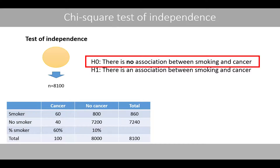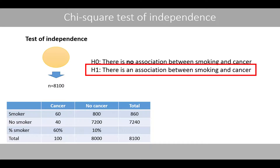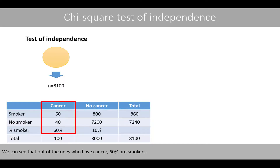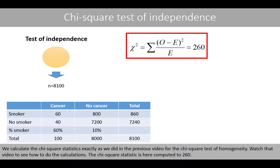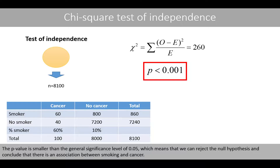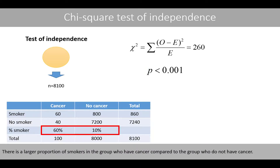The null hypothesis of this test states that there is no association between smoking and cancer. We can see that 60% of smokers have cancer, whereas only 10% of non-smokers have cancer. We calculate the chi-square test statistic exactly as we did in the previous video for the chi-square test of homogeneity — watch that video to see how to do the calculations. The chi-square test statistic is here computed to 260. The p-value is smaller than the general significance level of 0.05, which means that we can reject the null hypothesis and conclude that there is a significant association between smoking and cancer. There is a larger proportion of smokers in the group who have cancer compared to the group who do not have cancer.